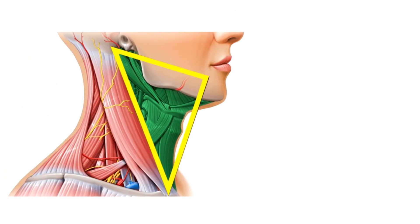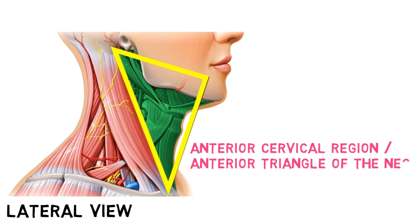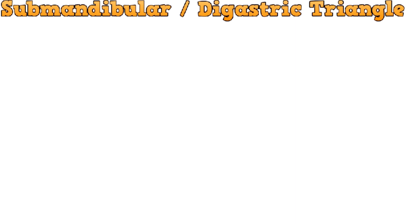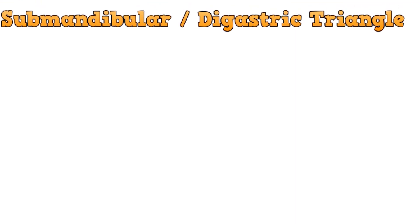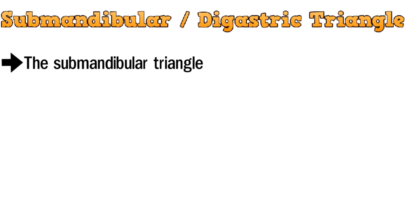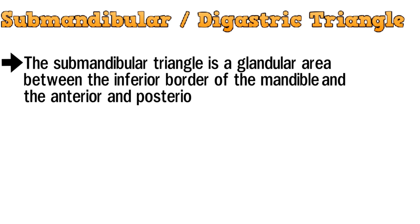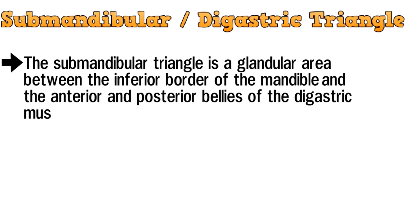This is the lateral view, and this area shaded in green is the anterior cervical region or the anterior triangle of the neck. Now let's start with the first sub-triangle, the submandibular or the digastric triangle. The submandibular triangle is a glandular area between the inferior border of the mandible and the anterior and posterior bellies of the digastric muscle.